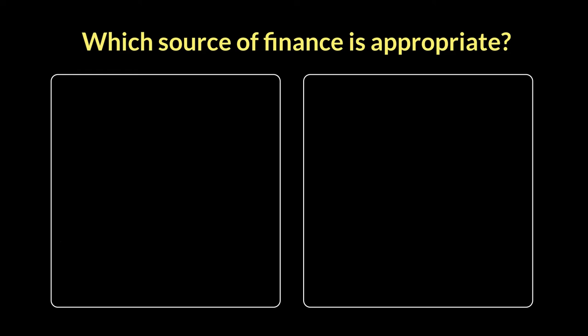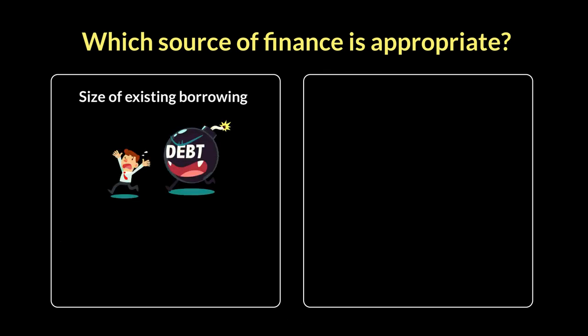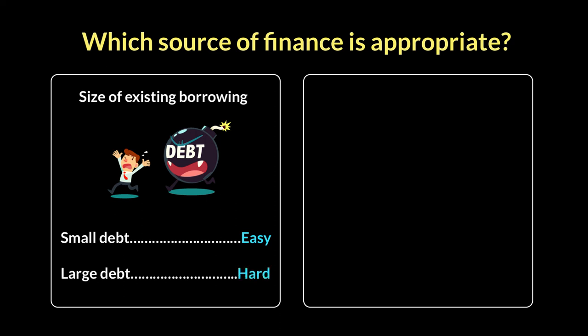Another factor to look at before seeking a new source of finance is the size of your existing borrowing. When you look to expand or buy assets, you borrow from a bank or other people. If you already have a lot of debt, new investors may be hesitant to give you more money — the assumption being that you're taking more money just to pay off previous debts. That's where there may be hesitation from investors and banks. So if your existing borrowing is small, it might be easy to get new finance; if the size of your debt is large, it's harder to secure newer sources of finance.